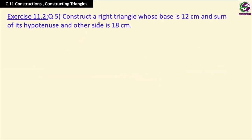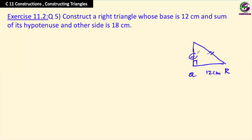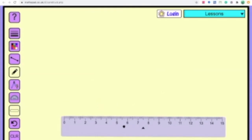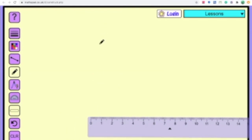On to the last question of this chapter: construct a right triangle whose base is 12 centimeters and the sum of its hypotenuse and the other side is 18 centimeters. We have a right triangle, so the right angle is 90 degrees. Here I'm taking half — 6 centimeters for the base and 9 centimeters for the sum of the two sides — because there is no space on the scale. Please take 12 and 18 as given.